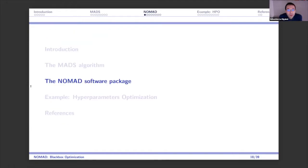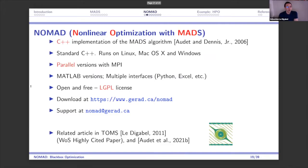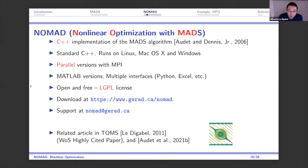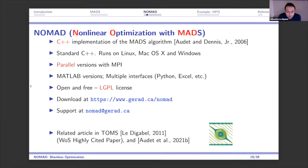Now I want to go to the software that implements this method. NOMAD stands for Nonlinear Optimization with MADS — NOMAD is the software, MADS is the algorithm. This is an implementation in C++ — standard C++, runs on every platform, totally standalone with no external libraries. It's parallel with MPI and OpenMP. We have MATLAB versions and interfaces with Python and Excel. It's free and open source. If you Google 'NOMAD optimization' you'll find it. We have a forum for support.